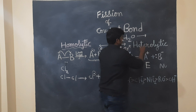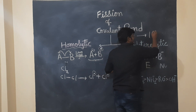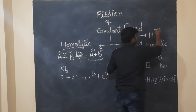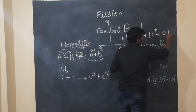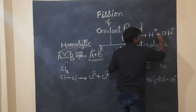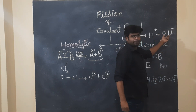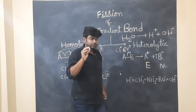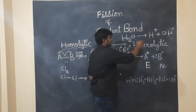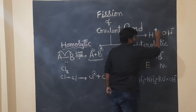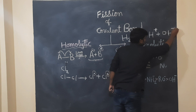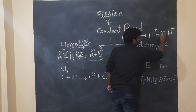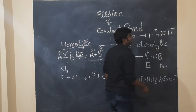H2O splits into H⁺ plus OH⁻. This is our heterolytic fission. H⁺ is electron deficient and OH⁻ is electron rich. This is an unshared pair of electrons. H goes to OH.